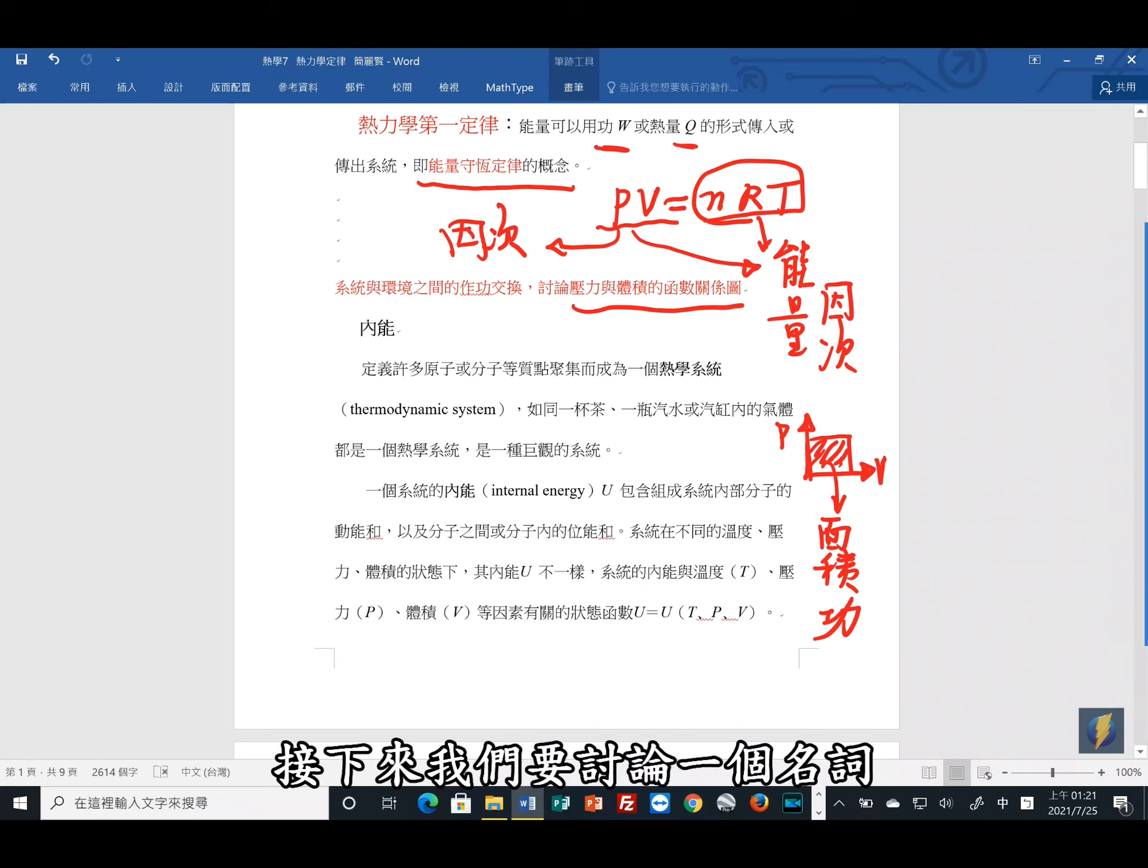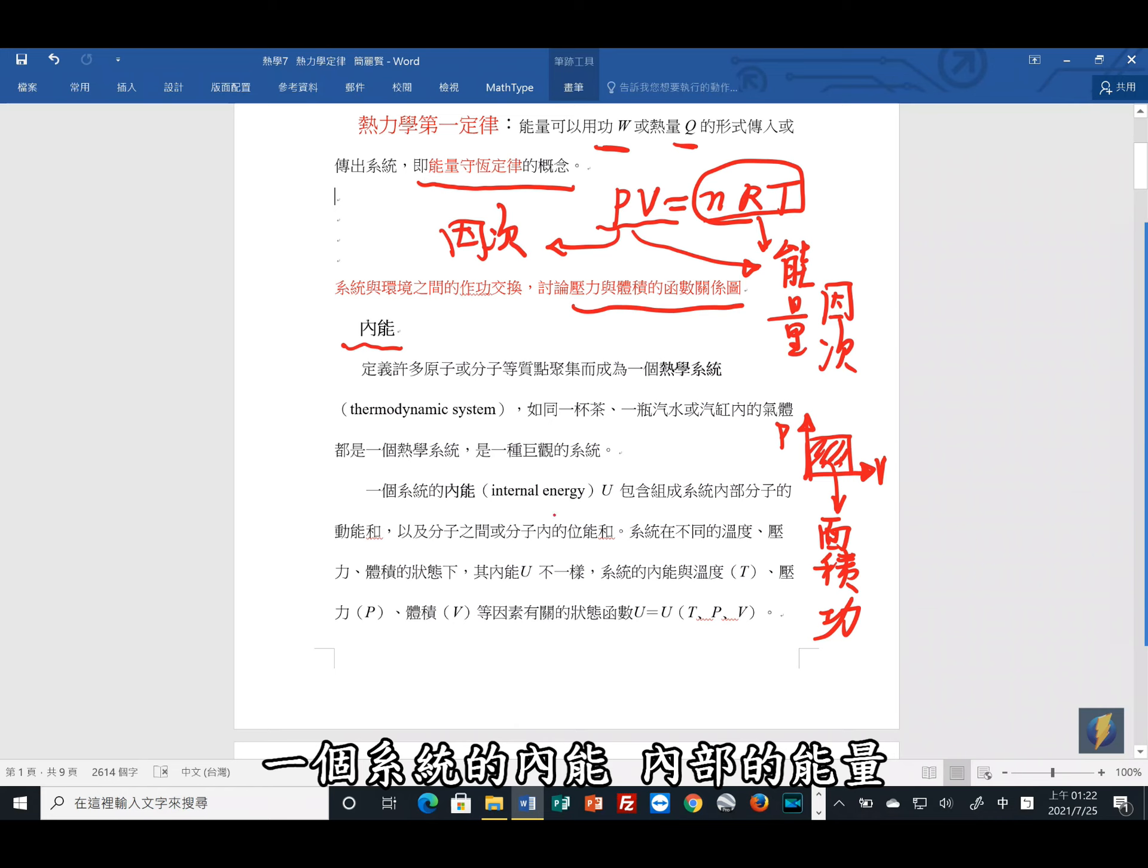接下来我们要讨论一个名词,叫做内能。什么是内能呢?我们定义,许多的原子或者分子的质点聚集在一起,就会形成的热学系统。当一杯茶、一瓶汽水,或者气缸内的气体,它都可以是一种热学的系统。这是一种巨观的系统。那一个系统的内能,内部的能量,我们代号用U。